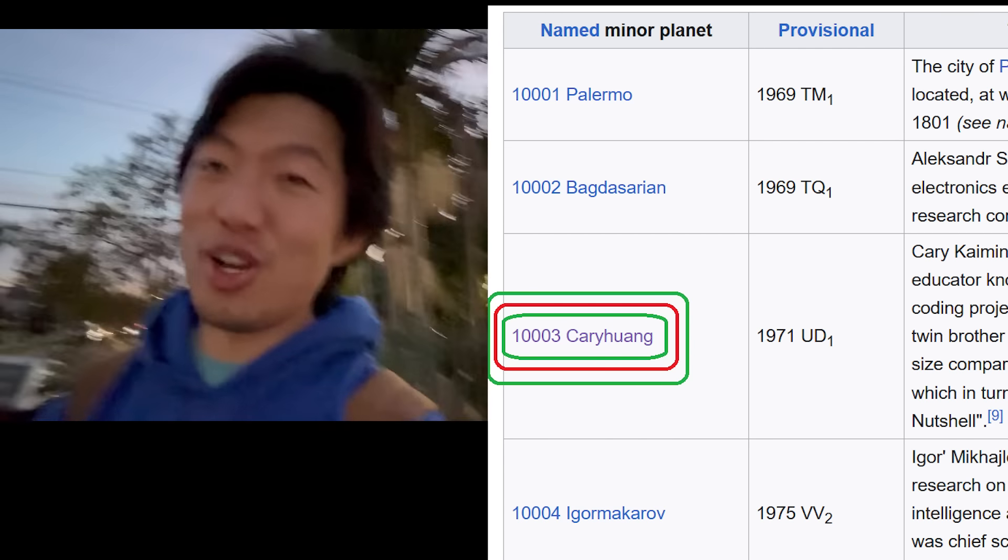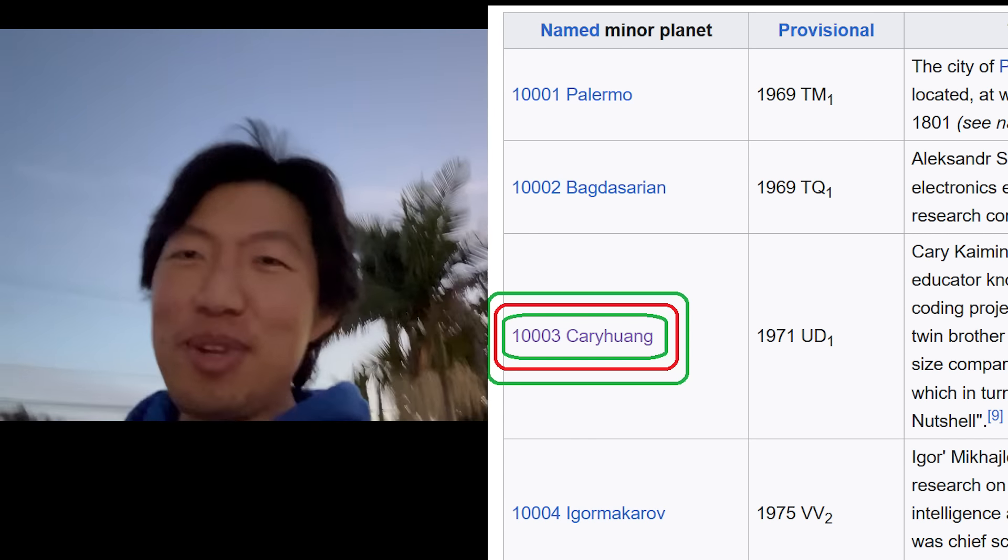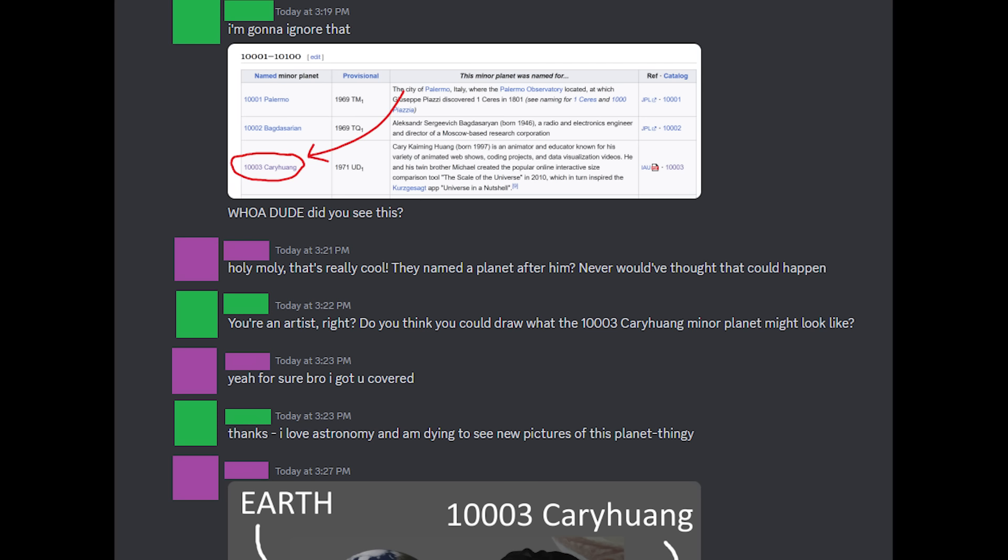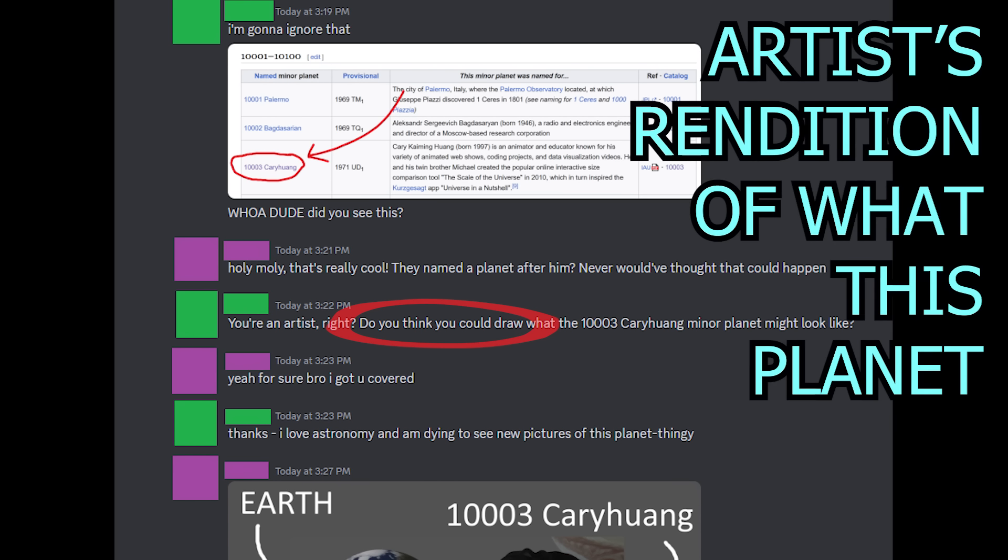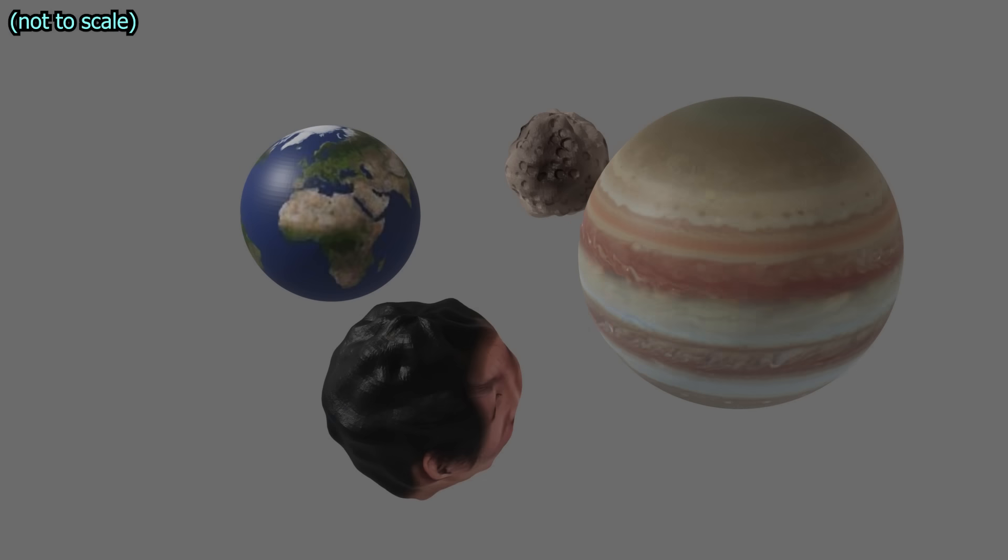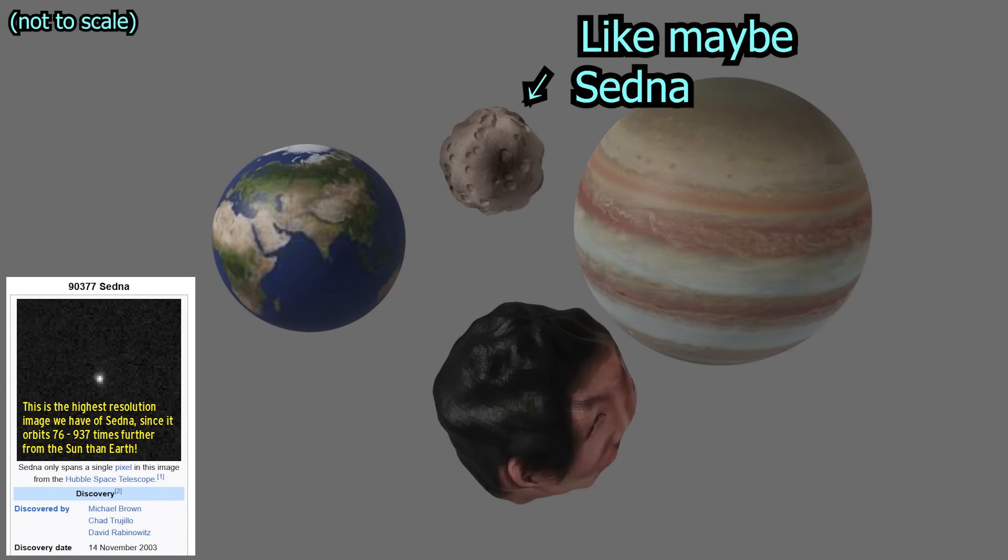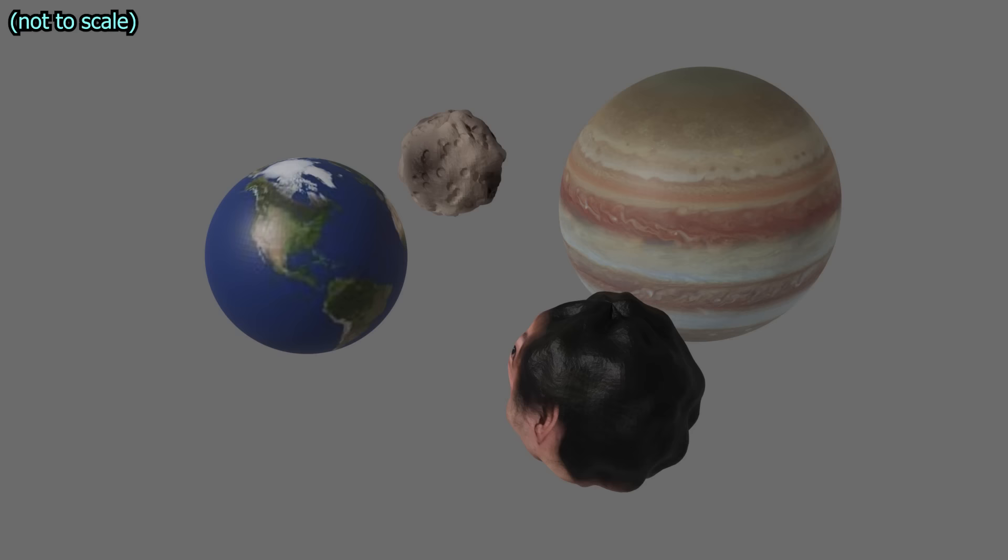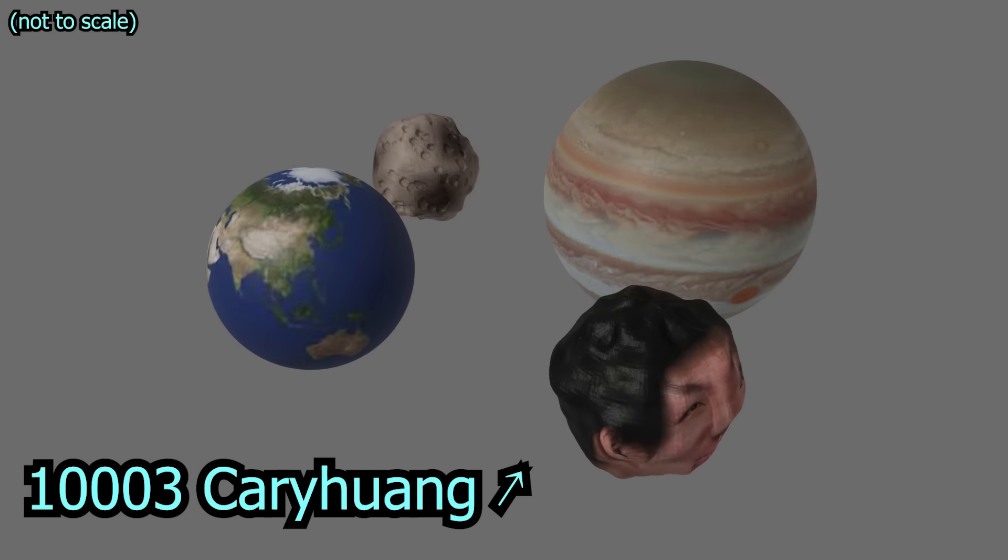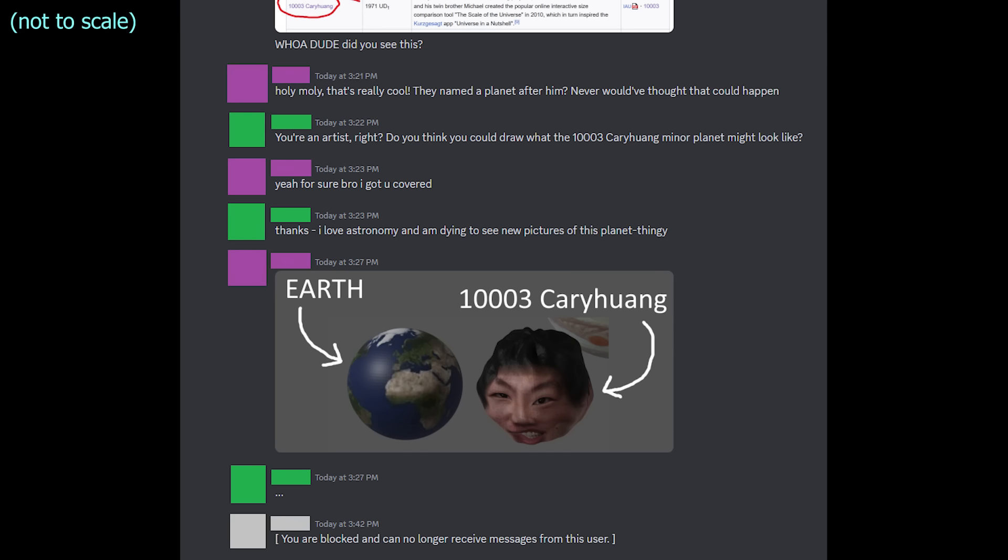Obviously, it's a huge honor to be attached to something happening up there in the astronomical world. So recently, someone asked for an artist's rendition of what this planet might look like. Anyway, nothing here is to scale, but we have Earth, Jupiter, some random dwarf planet like maybe Sedna, and then we have a realistic depiction of 10003 Kari Huang. Yeah, that artist was me. And the person who asked for this was also me. But what's going on?